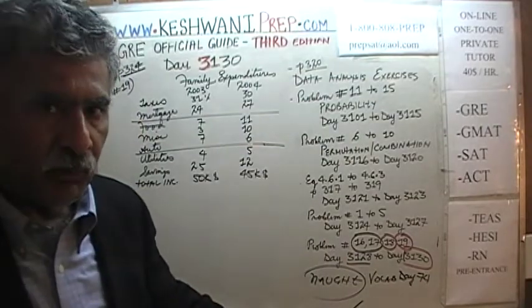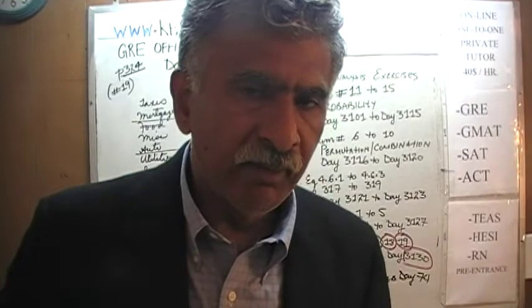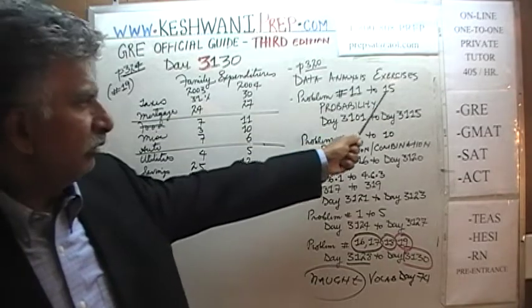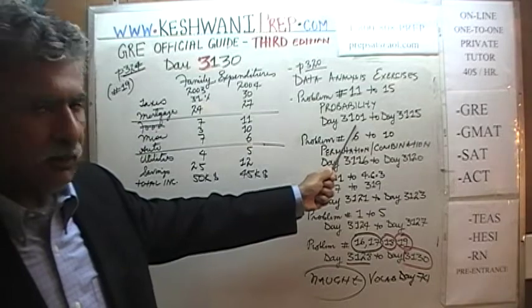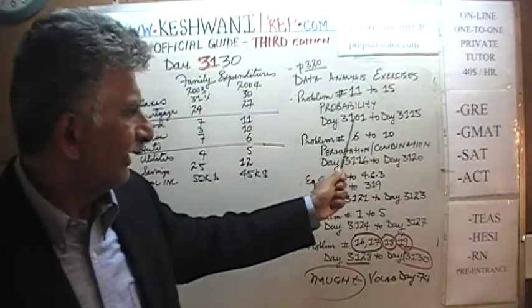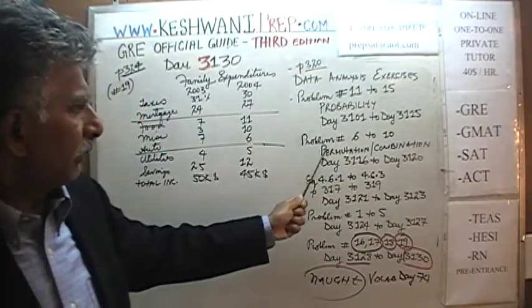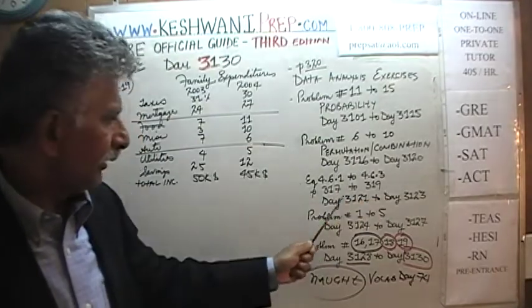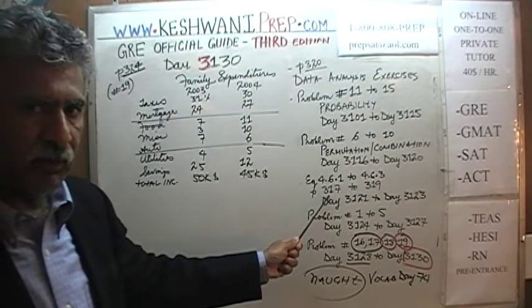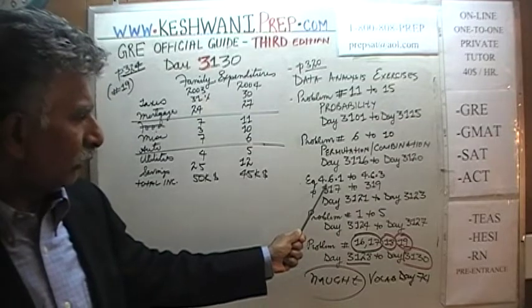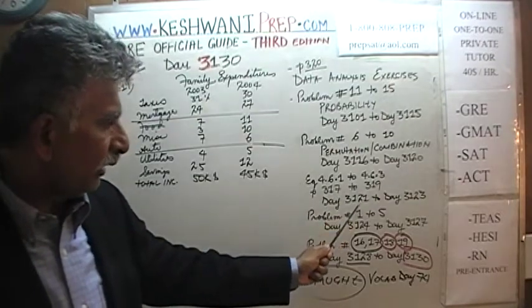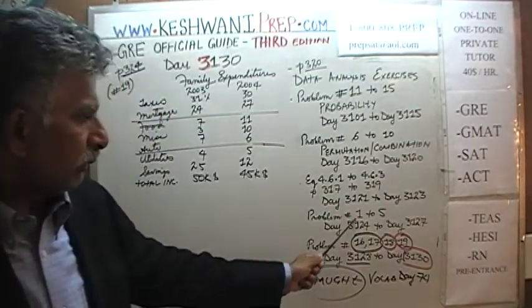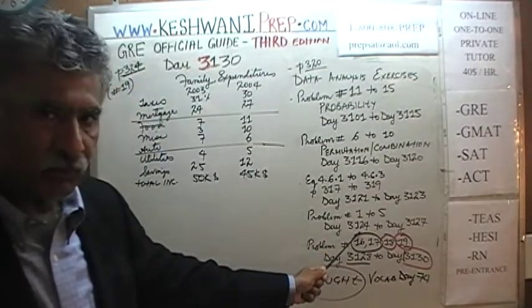I want to quickly go over the order in which I did the problems — I did not do them in order from 1 through 19. Problems 11 through 15, dealing with probability, were covered on day 3101 to 3115. Problems 6 through 10, dealing with permutations and combinations, were done on day 3116 to 3120. The three examples — 4.6.1, 4.6.2, and 4.6.3 — on pages 317, 318, and 319 were done on days 3121, 3122, and 3123. Problems 1 through 5 were done on days 3124 through 3127.